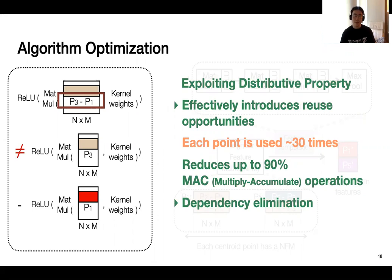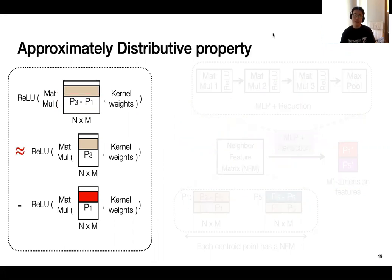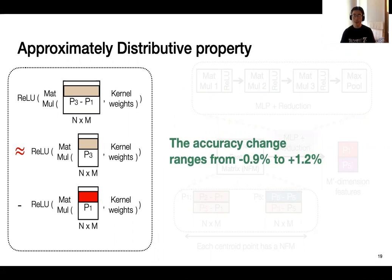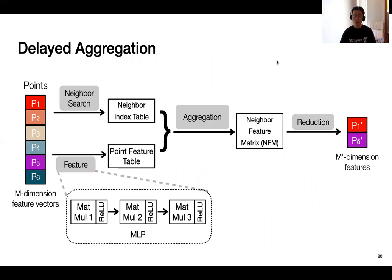Still, our experiments indicate that by retraining the optimized networks from scratch, the accuracy hardly drops. And in some cases, it even increases. So here, this distributive property still approximately holds. With all of that, we call this optimization delayed aggregation. So the reason is that we can now do neighbor search and feature computation in parallel prior to aggregation. We're essentially delaying the aggregation to the very end of the network.